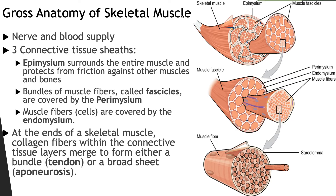Skeletal muscle tissue is highly vascularized and highly innervated. Because skeletal muscle tissue has a high metabolic rate, it needs a continuous supply of oxygen and nutrients from the bloodstream. Because skeletal muscle tissue is voluntary, each muscle must have a nerve that innervates each cell to stimulate a contraction. There are a few connective tissue layers: the epimysium, the perimysium, and the endomysium. At the end of skeletal muscle, collagen fibers of the connective tissue layers merge to form either a bundle called a tendon or a broad sheet known as an aponeurosis, which help anchor the muscle to the bone.